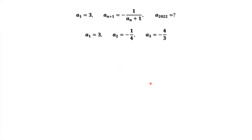This implies a4 equals a1. What does this mean? This means the sequence is a cycle — after three steps, the sequence comes back. Now let's derive the general result.